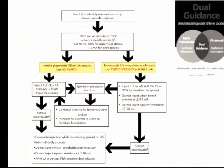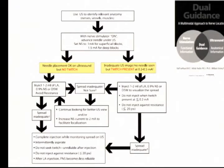Depending on whether a twitch is present, you process accordingly. If ultrasound imaging is inadequate but a twitch is present, you can proceed with injection — but do not inject when the twitch is below 0.2 milliamp, and never apply medication with high pressure. If needle placement is not perfect on ultrasound and there is no twitch, injection of one to two milliliters of local anesthesia or glucose may be possible to avoid resistance, and if you have adequate spread, an appropriate block follows. This procedure is a little complex, but it represents the concept of dual guidance.